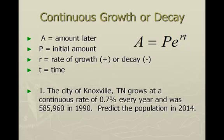In this first example, we're looking at the city of Knoxville, Tennessee. It's growing at a continuous rate of 0.7% every year. Notice how they told us in the problem that it was a continuous rate of growth, so we know we're using this formula. The population was 585,960 in 1990, and we want to predict the population in 2014. So first, we're going to plug the numbers into this formula. P is the initial population, which is 585,960.